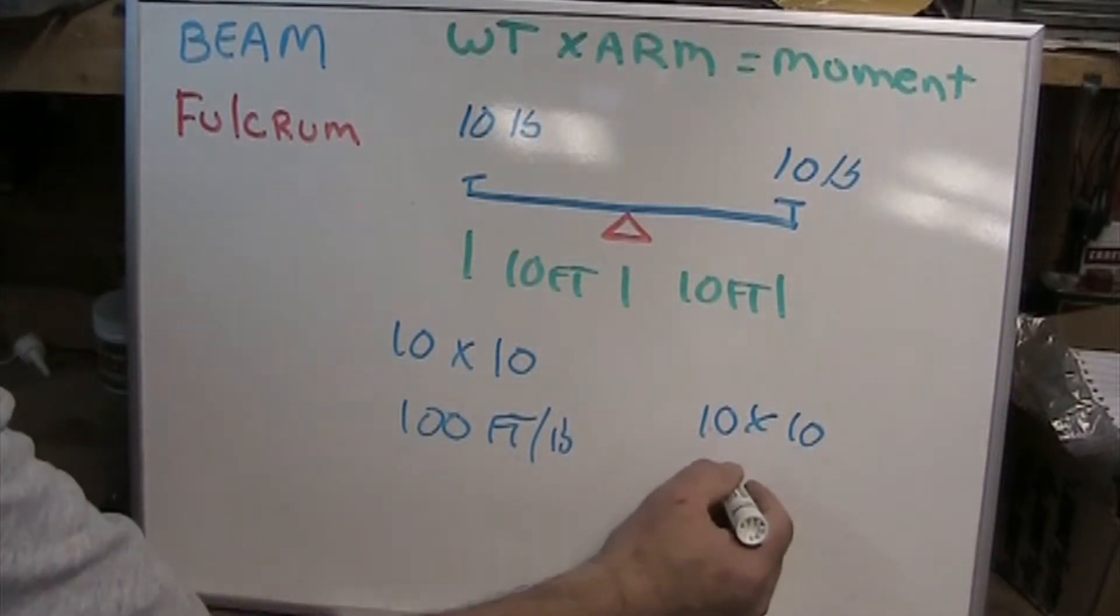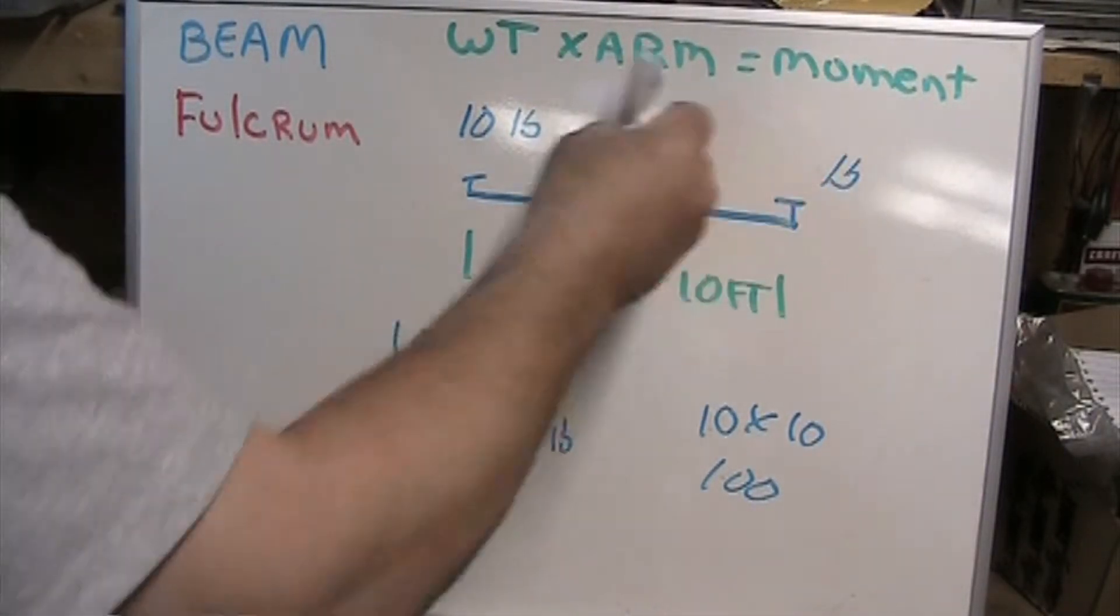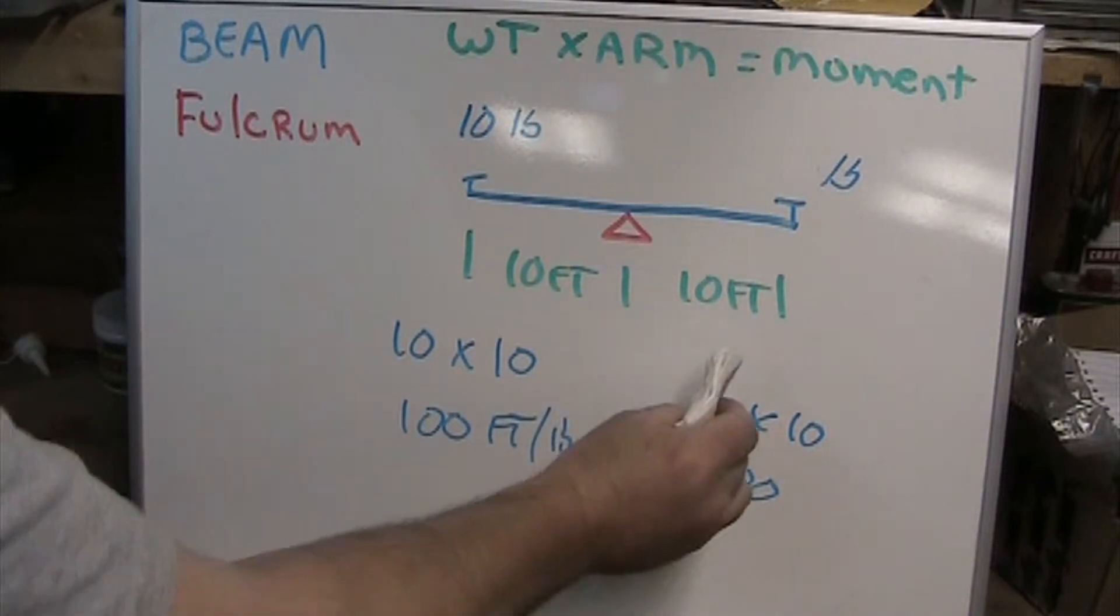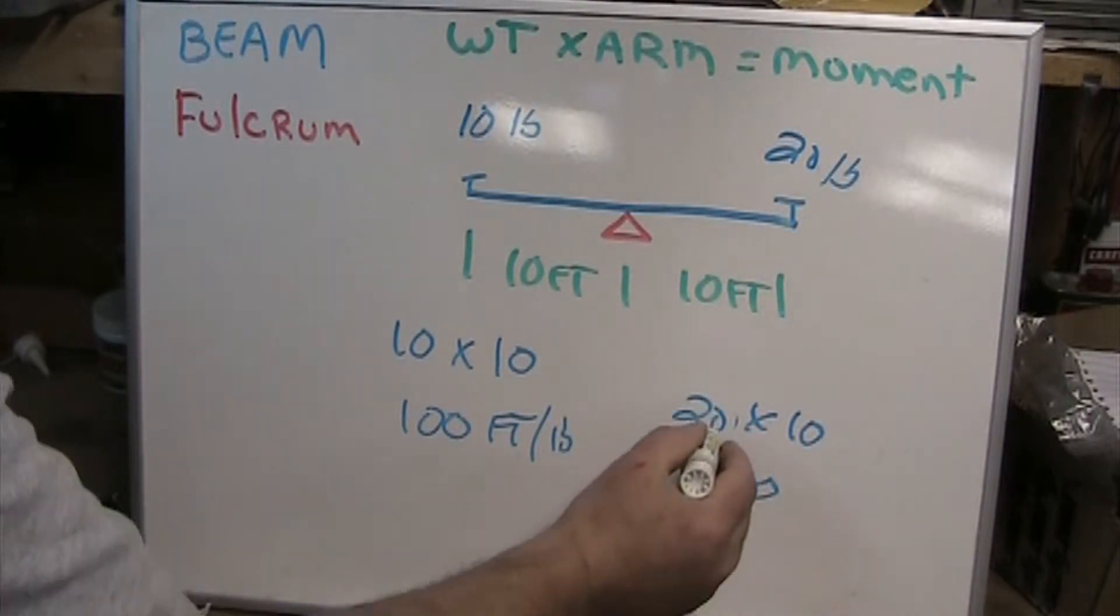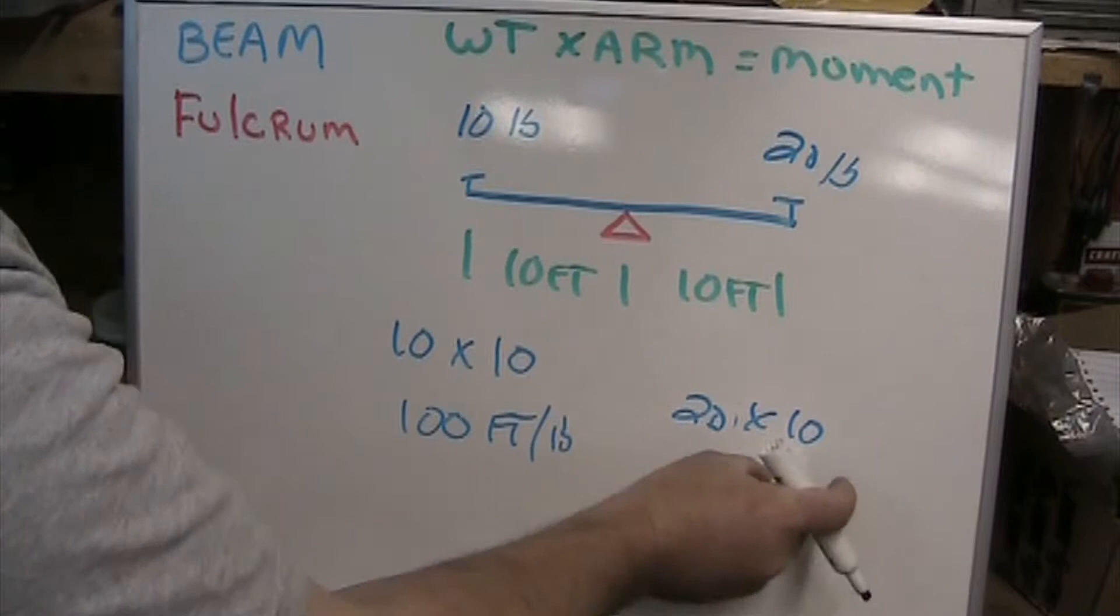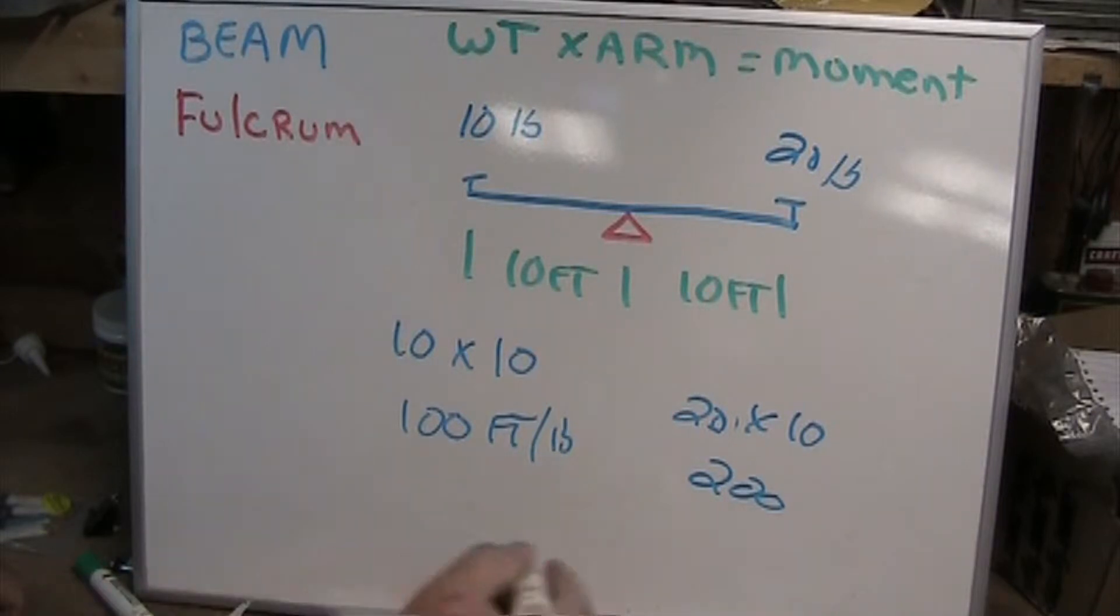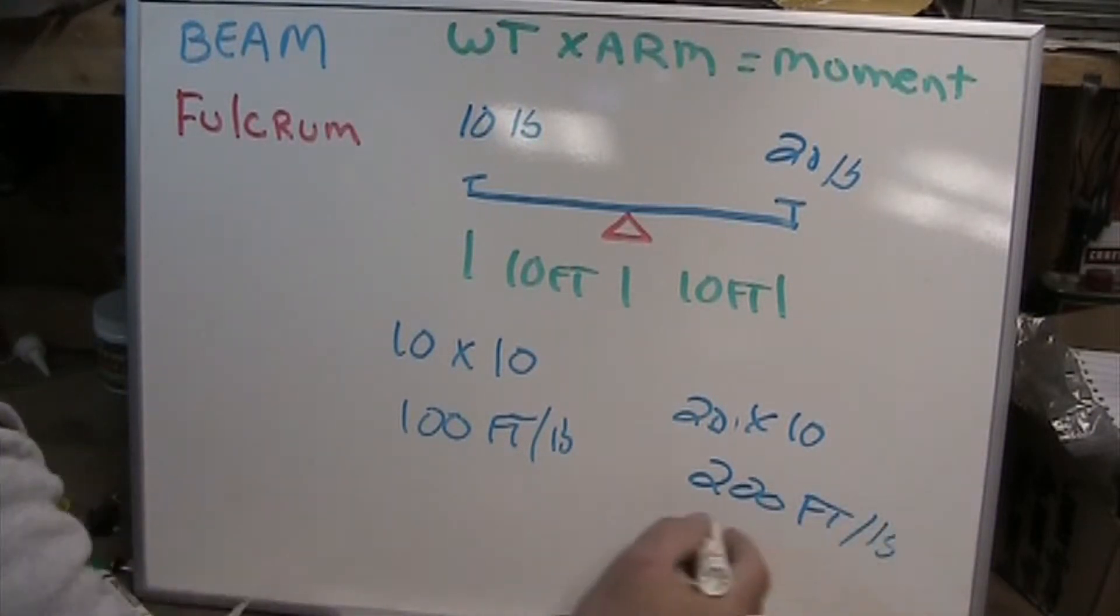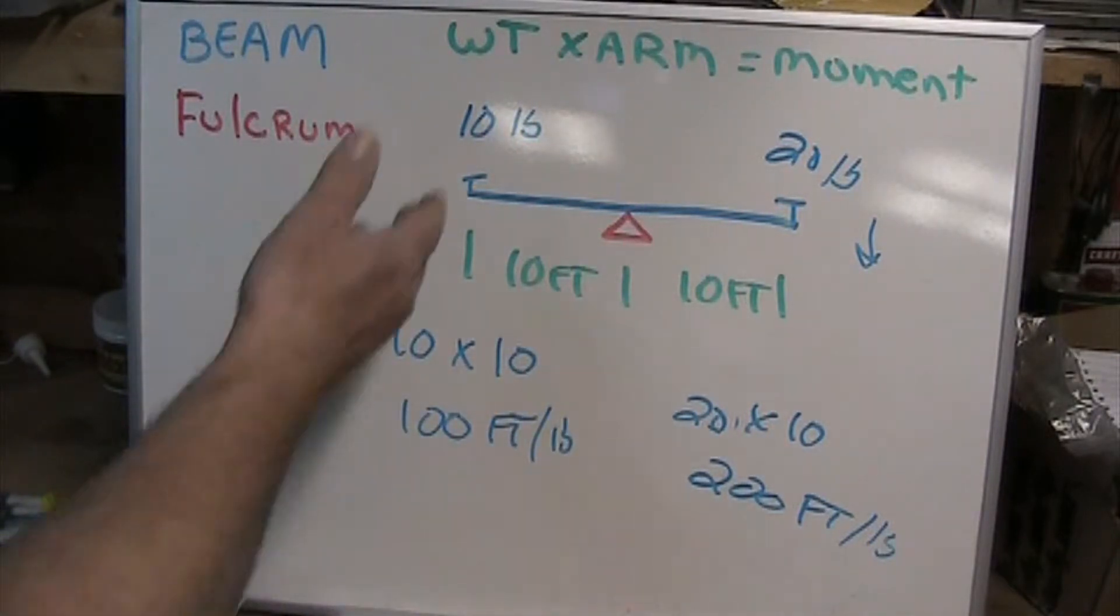Same thing on the other side: 10 times 10 equals 100. Now suppose I make that weight 20 pounds. 20 pounds times a 10 foot arm gives us 200 foot-pounds moment. They are not equal and the beam balance will tip down on the heavy side.